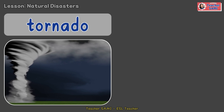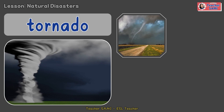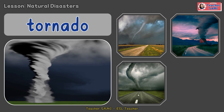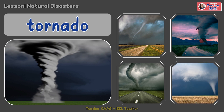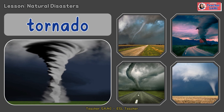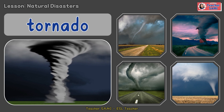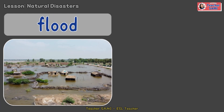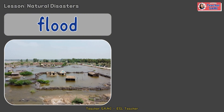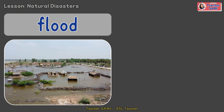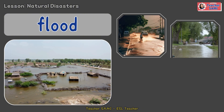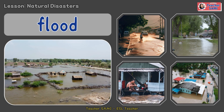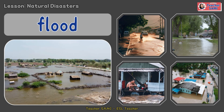Tornado: a tornado is a very strong wind that spins in a big funnel shape. Flood: a flood happens when there is too much rain and the water covers the land.